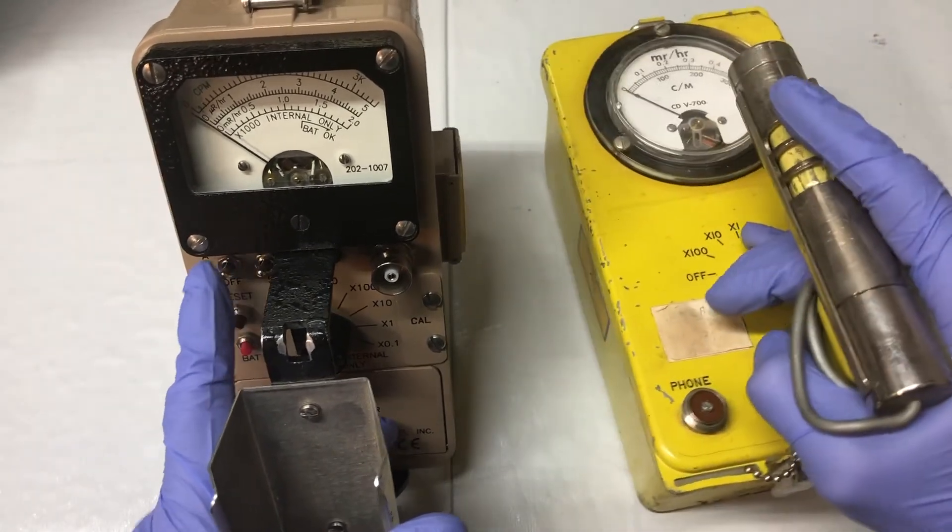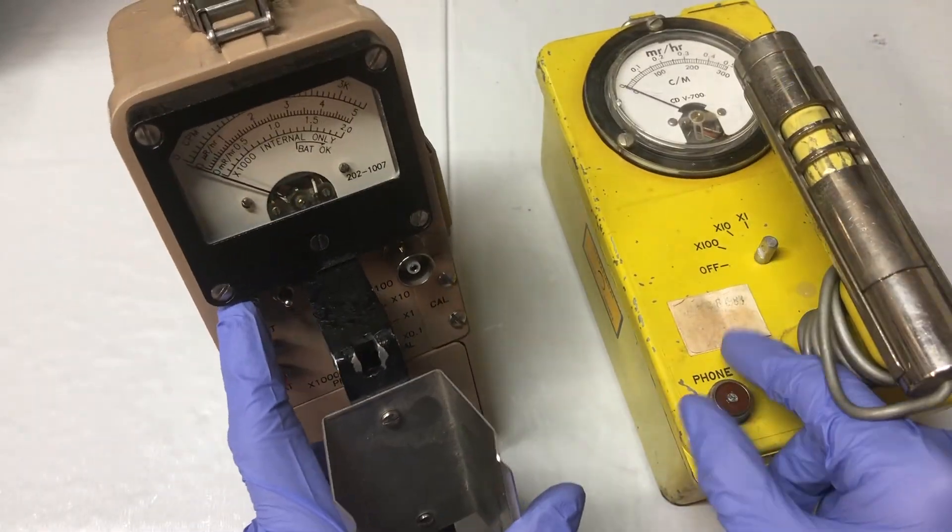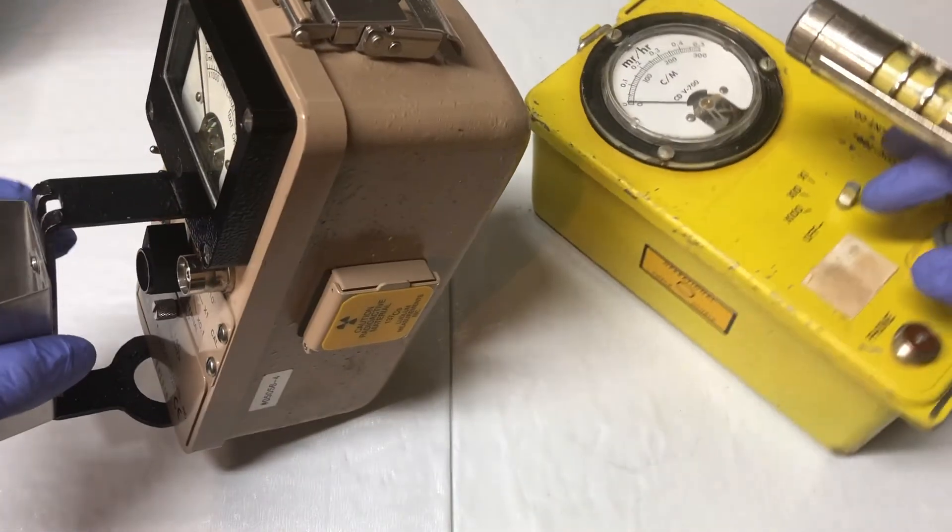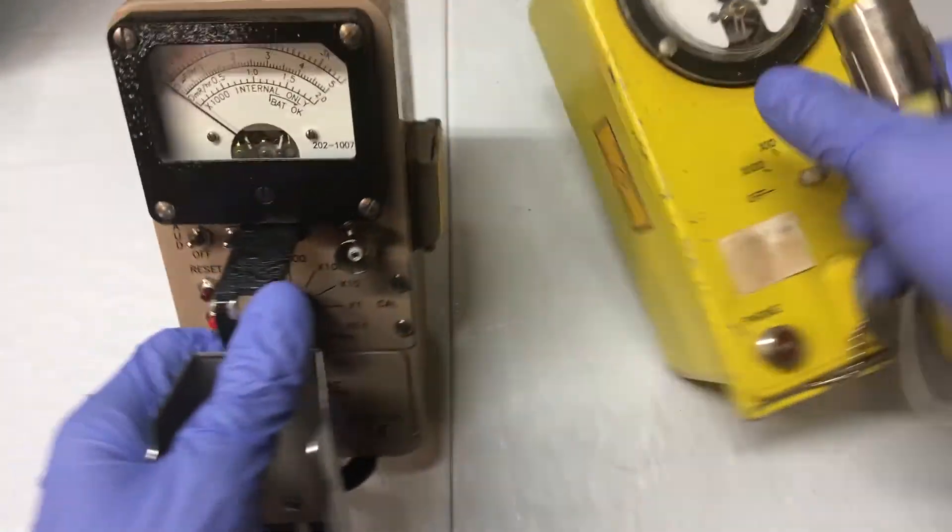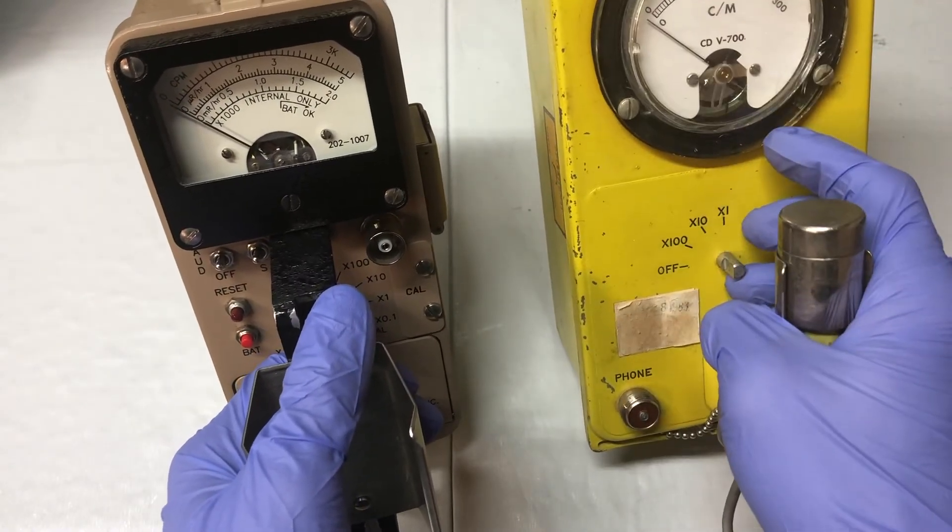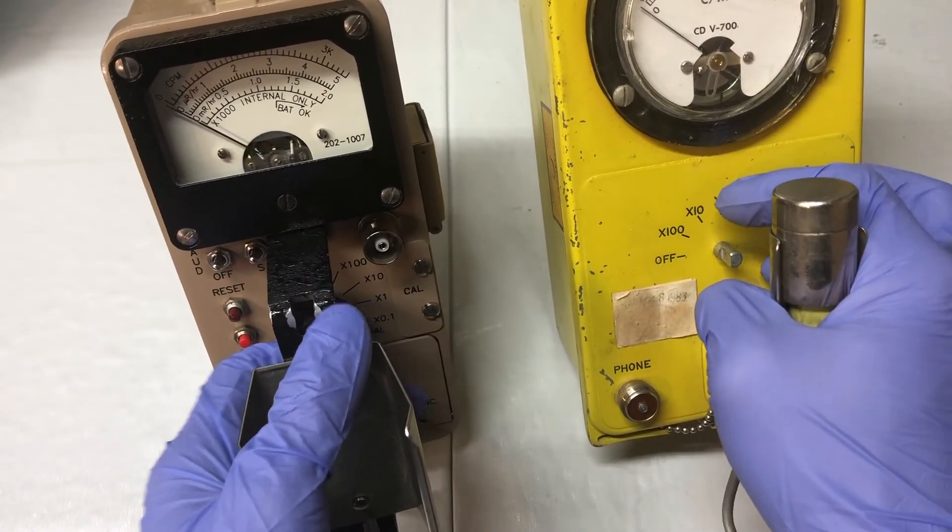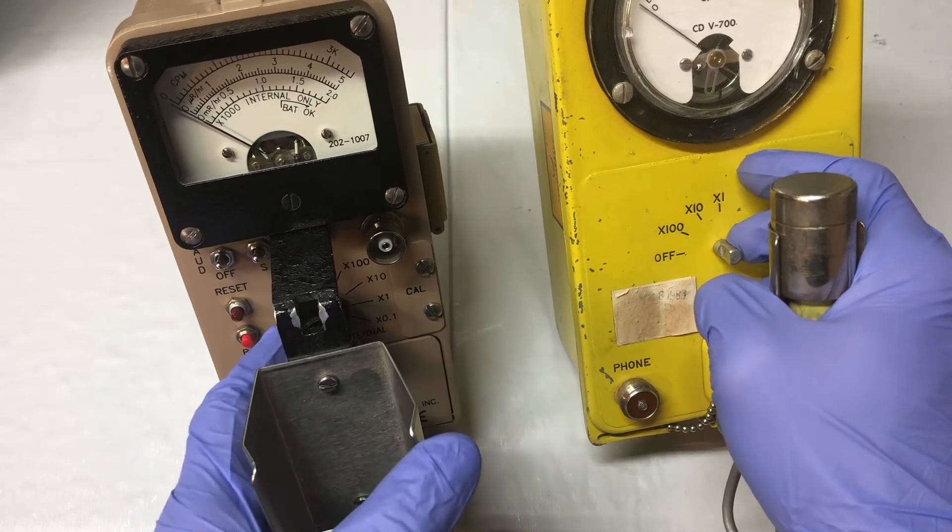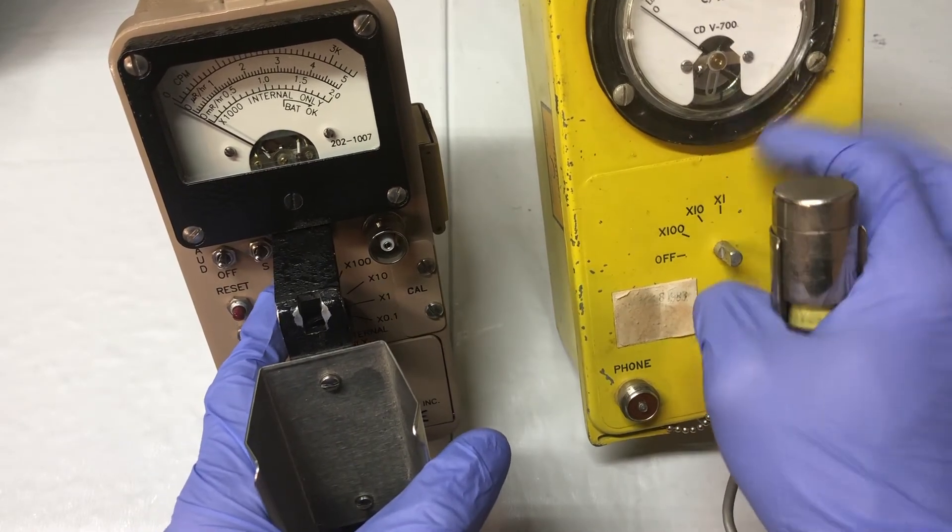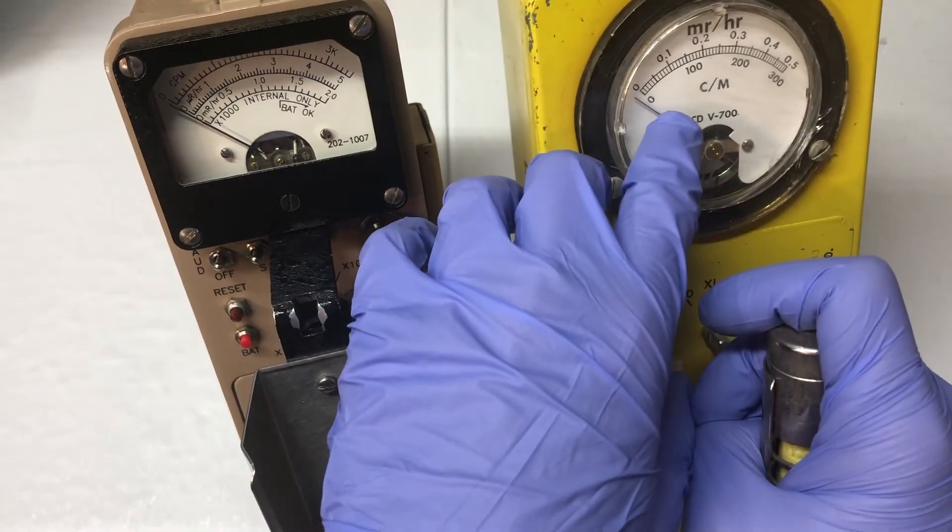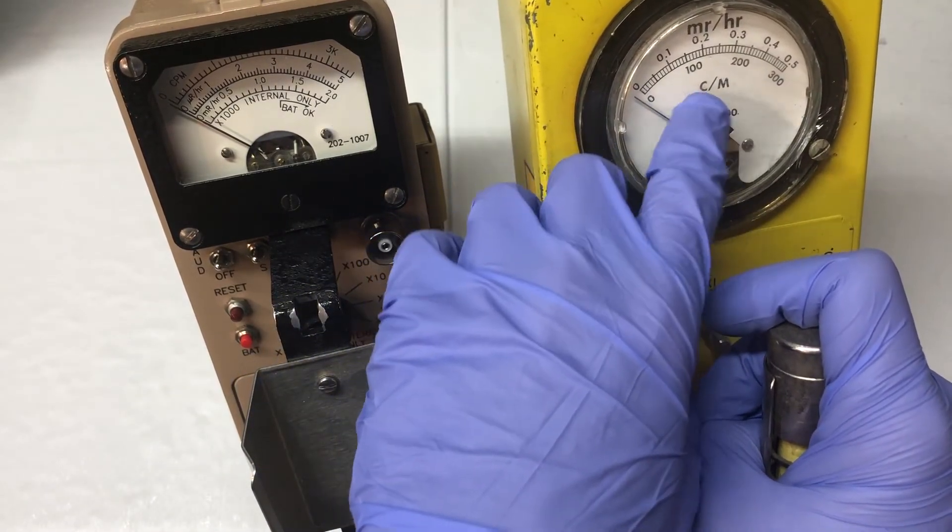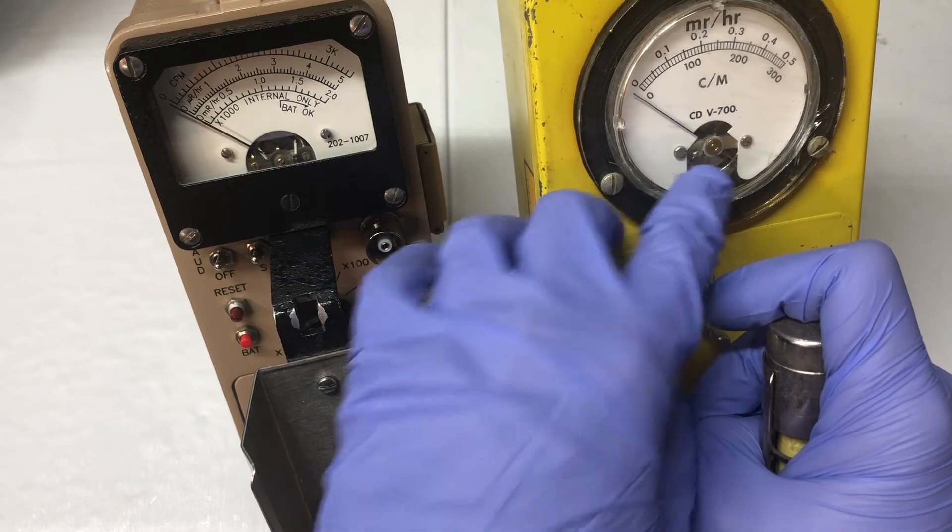This one also does not come with an audible speaker and you have to attach headphones, but they do both come with operational check sources. They both read in counts per minute and have times 100, times 10, and times 1, but this does not have times 0.1 or times 1000, or an internal probe. It also doesn't measure roentgens per hour or milliroentgens per hour. It doesn't have a battery test feature either—it's more bare bones compared to the more modern Ludlum.